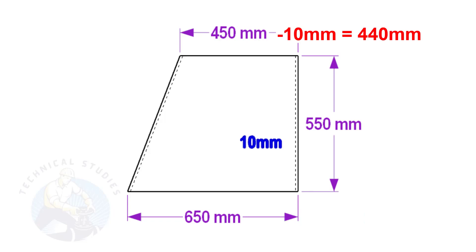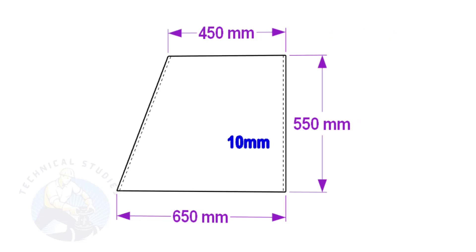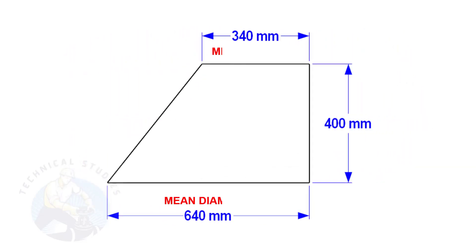Similarly, deduct 10 mm from 450 to get the mean diameter of the top side. In this layout, the bottom and top mean diameters are 640 mm and 340 mm respectively, and the height is 400 mm.